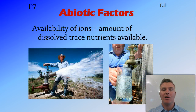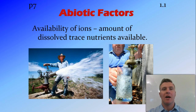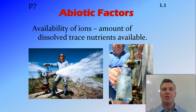Availability of ions refers to the amount of trace nutrients available. All plants and animals need things like chloride ions, magnesium, and sodium to live. How much of those ions are available will influence what animals can live there and how many can live there.